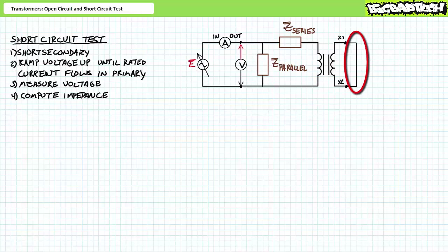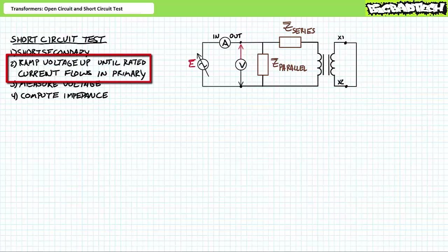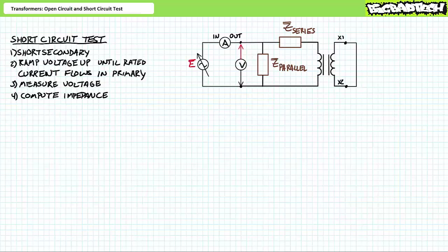As the name implies, this test is performed with a short circuit on the secondary windings. Voltage on the primary is ramped up from zero using a variable AC voltage source until the rated current is flowing in the primary. Do not apply the rated voltage to the primary with a short circuit on the secondary — you will destroy the transformer and everything in close proximity. One must use a variable voltage source, starting at zero volts and slowly ramping it up until rated current is observed on the primary. The short circuit test necessitates a voltmeter and ammeter on the primary, and these instruments must be monitored at all times to ensure rated current is not exceeded.